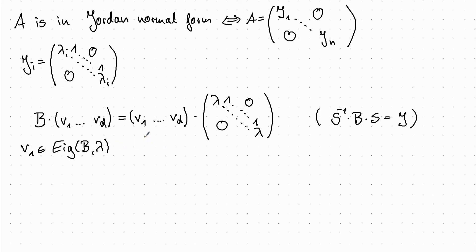For the second eigenvector, we get a slightly more complicated condition. We get B times V2 on the left side and on the right we have lambda times V2 plus V1, which is equivalent to B minus lambda times the unit matrix times V2 is equal to V1.